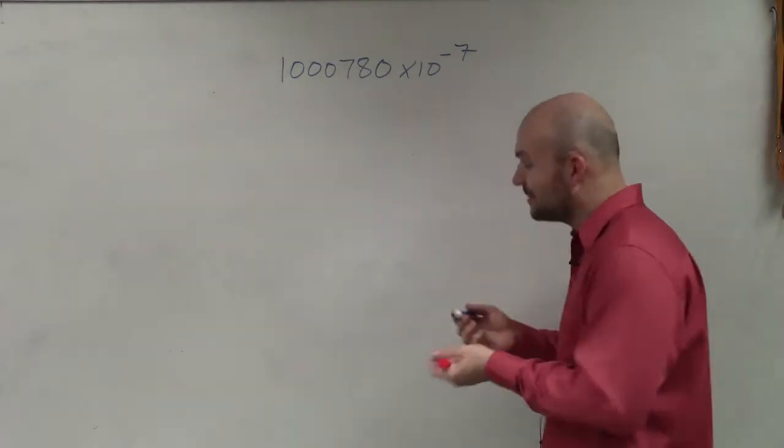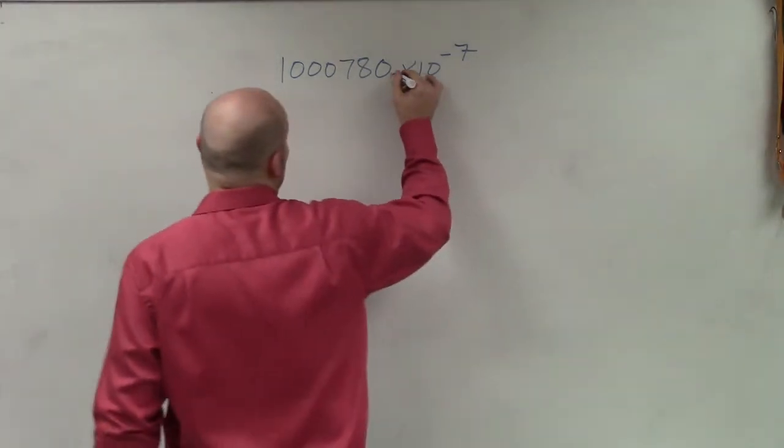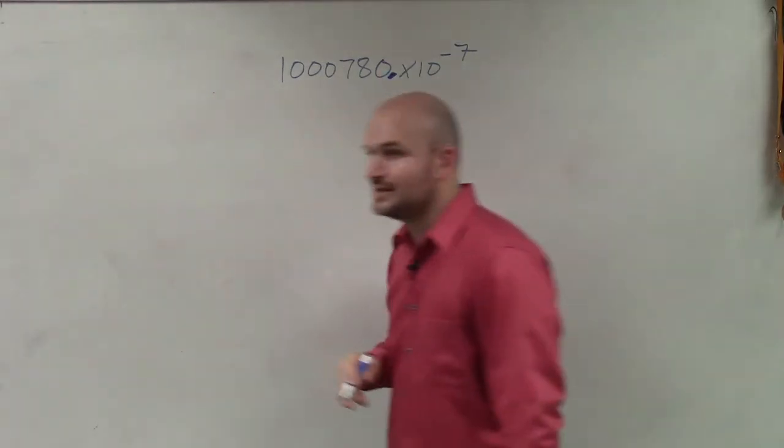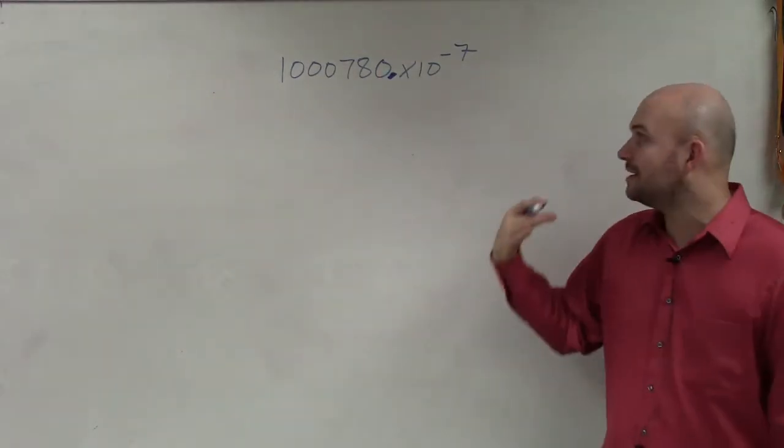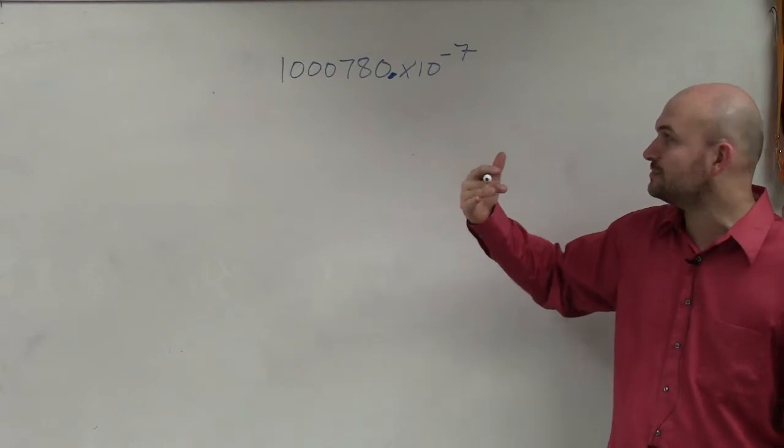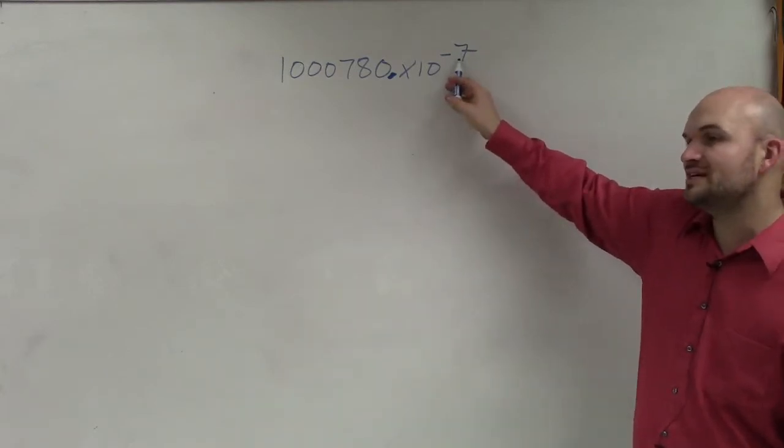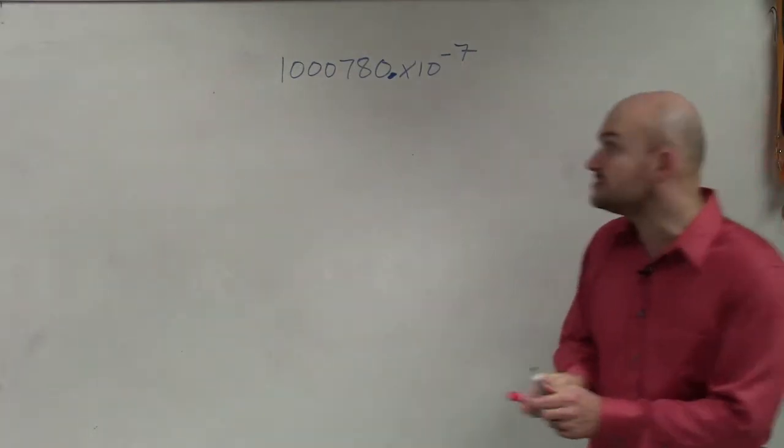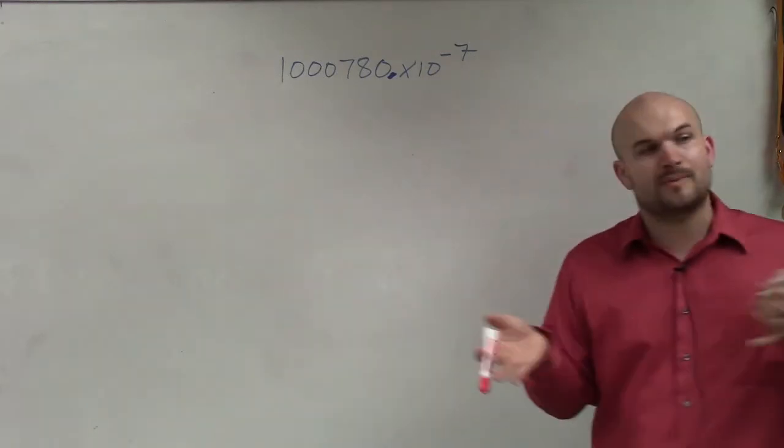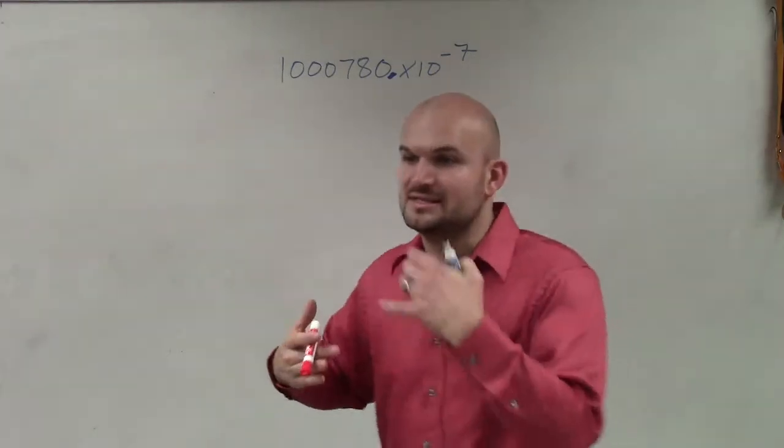So basically, what we need to do is know that our decimal point is here. So if I want to take this out of scientific notation, I simply need to move this negative 7 units to the left. You remember when we had the positive, we were moving to the right. Since it's negative, we're going to be moving 7 spaces to the left.